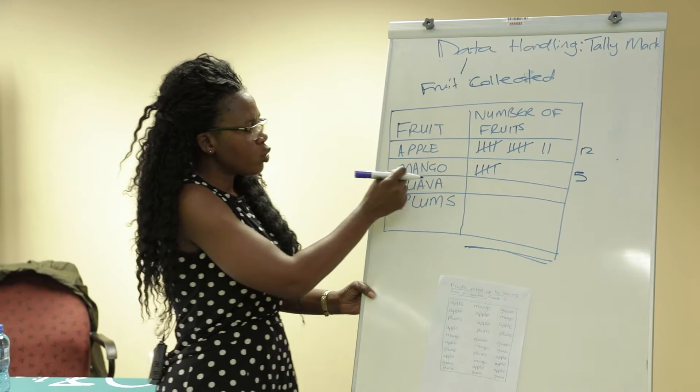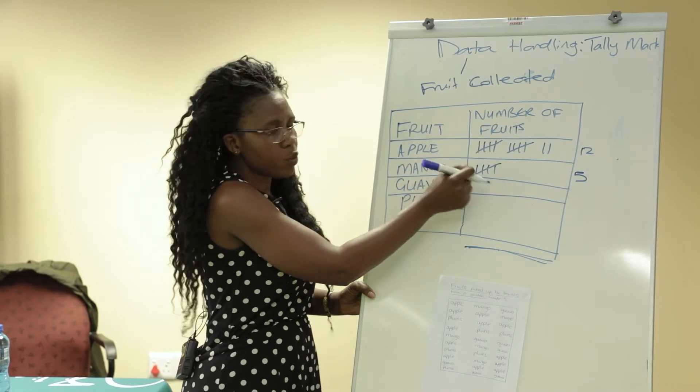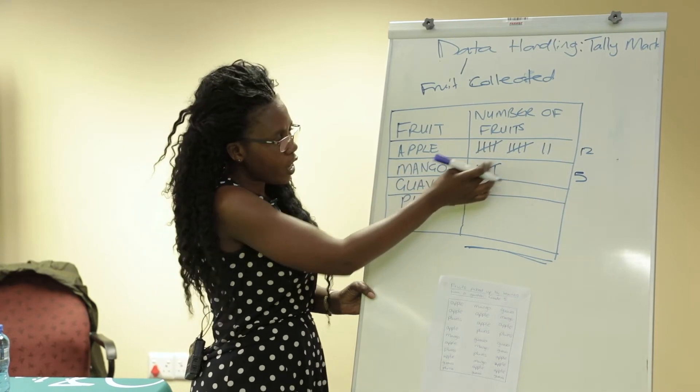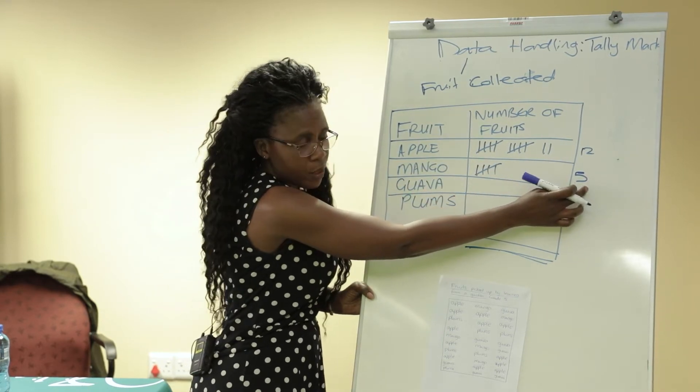You go on to count the mangoes — they give you a total of five, and that is the number there.